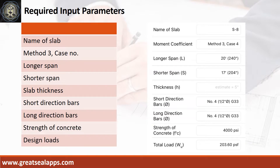Enumerating input parameters required: name of slab S8, case 4 panel design, longer span 20 feet, shorter span 17 feet, slab thickness 5 inches, main bars half-inch diameter at grade 33, strength of concrete 4,000 PSI, and total load 203.6 PSF.